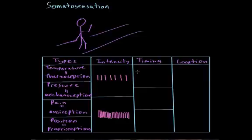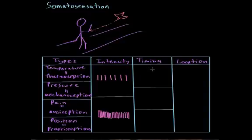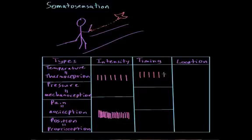Another thing we need to acquire from our environment is the timing. If a bird were to come down and peck this man, he needs to know when the pecking starts and when it stops. In order for a neuron to encode timing, there are three different ways it can do that. The first type fires consistently the entire time the bird is pecking — this type of neuron is non-adapting, because there's an equal amount of space between each successive action potential the entire time a stimulus is applied.